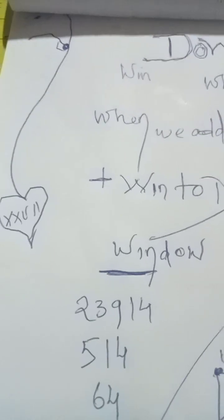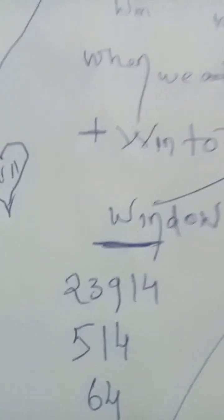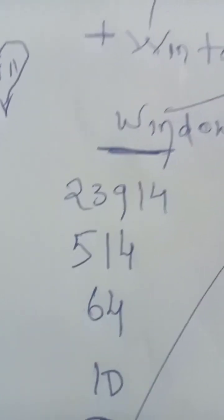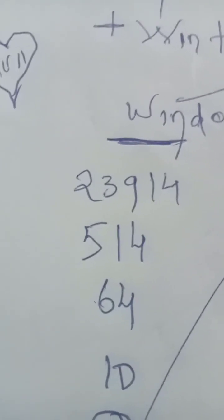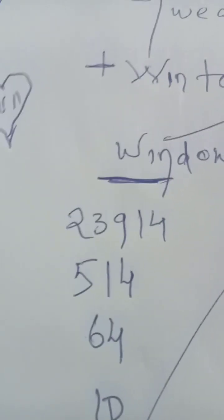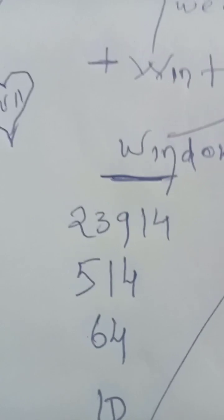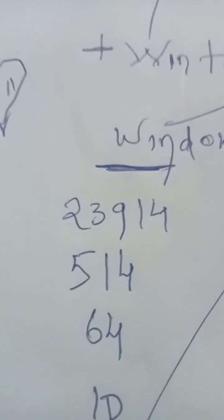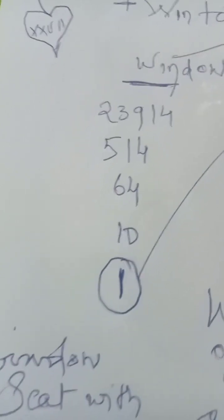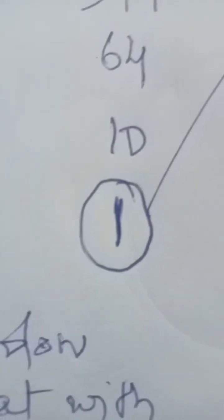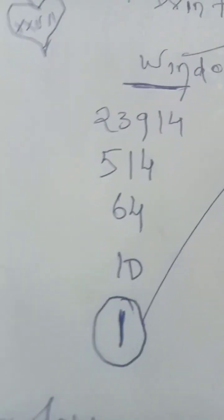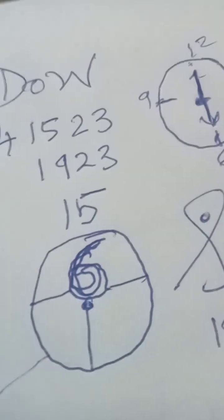WIN is nothing but W is 23, I is 9, and N is 14. 23 plus 9 plus 14. 23 is 5, and 9 plus 14, 9 plus 1 is 10, 10 plus 4 is 14. So 5 and 4, now 5 and 4 is 64, 64 is 10, and 10 is 1 plus 0 is the 1. So the WIN is the 1.